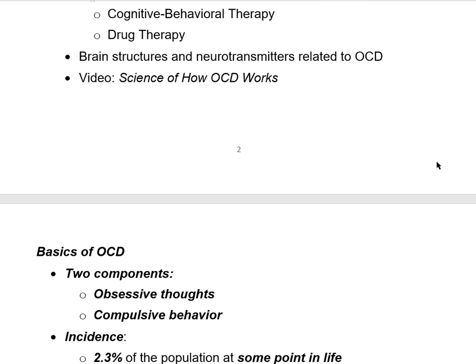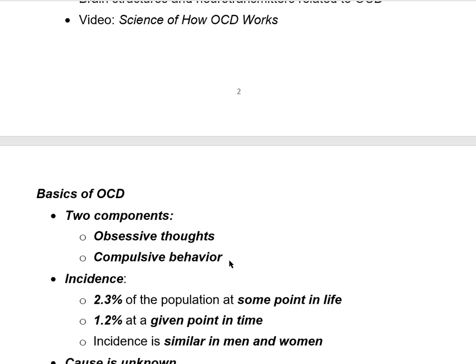Let's dive into the basics of OCD. As the name suggests, it consists of two components: obsessive thoughts and compulsive behaviors. How common is it? Researchers tell us it affects about 2.3% of the population at some point in their lives. At any given point in time, about 1.2% of the population displays symptoms of OCD. Incidence seems to be the same in men and women.